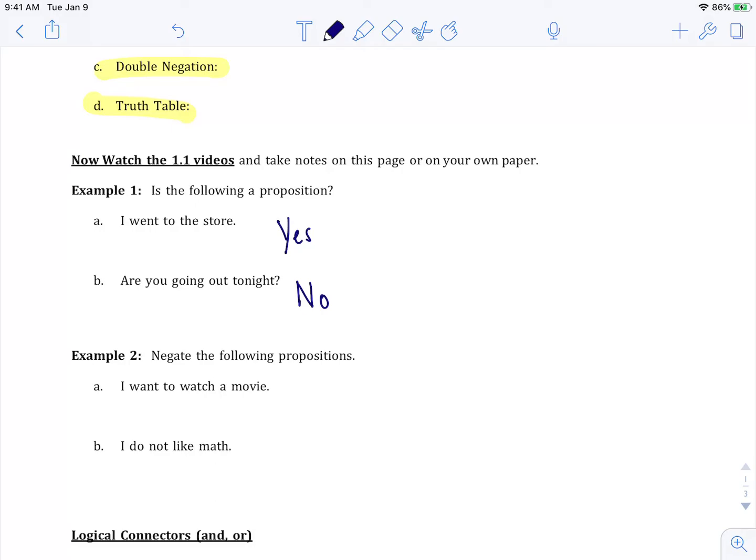Example 2, and you found this definition in your textbook, negation. It says negate the following propositions. In other words we're going to say the opposite. Example 2a says I want to watch a movie. If I want to negate that I would write I do not want to watch a movie.